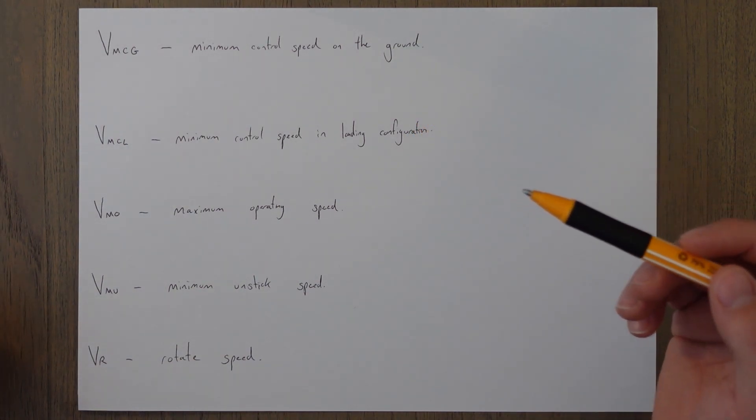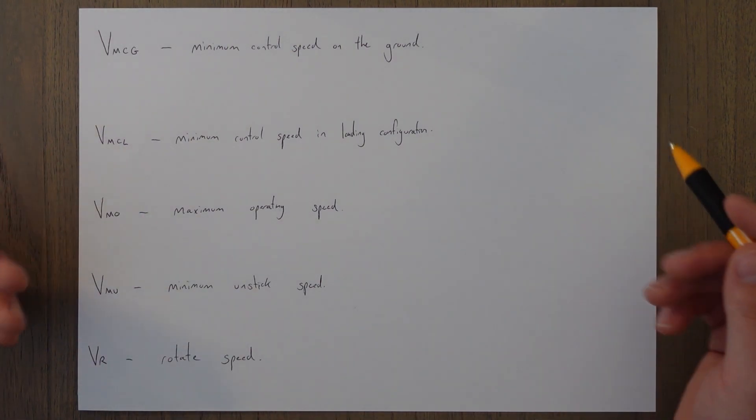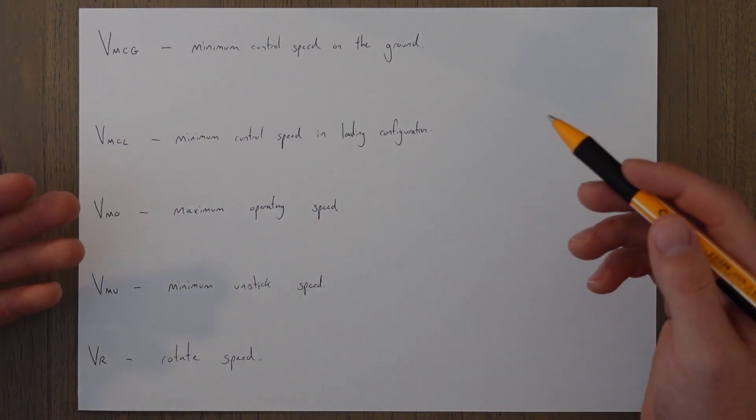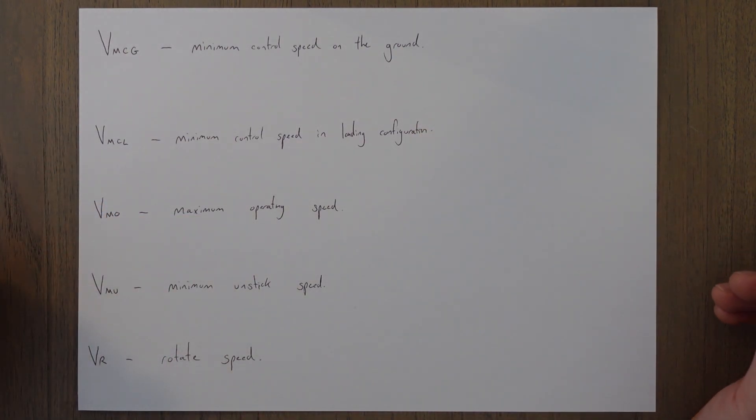VMCL is the minimum control speed in the landing configuration with one engine inoperative. This is the minimum speed that allows directional control in the case of a go-around and a rapid application of maximum power on the remaining engine.